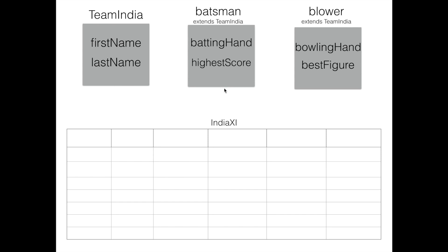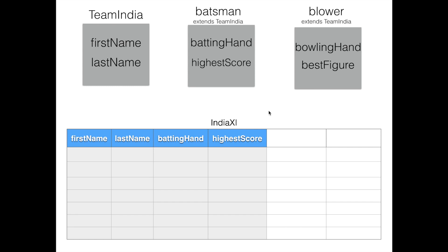First I'll have columns called first name and last name — these two columns are coming from the Team India class. Now it's time to enter the two properties from the Batsman class: batting hand and high score. And let me also enter bowling hand and best figure as columns — these two properties come from the Bowler class. So to summarize: all the properties of the superclass and all the properties of the subclasses are represented as a single table. This is what Table Per Class Hierarchy in Hibernate means.